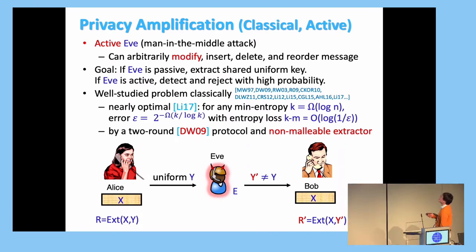And this case has been studied a lot classically. And actually, this can be done with a two-round protocol by Dodis-Wichs. And the protocol uses a construction called non-malleable extractor, and that's why we studied it in this work.